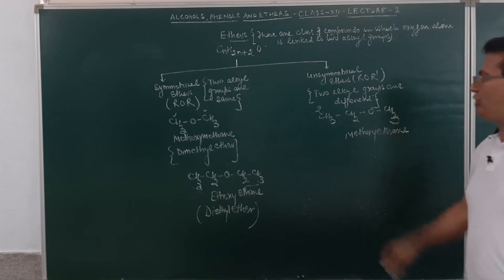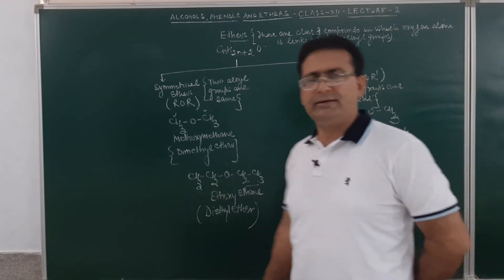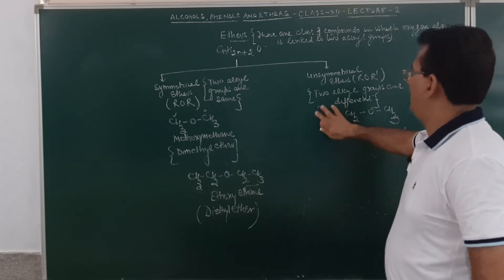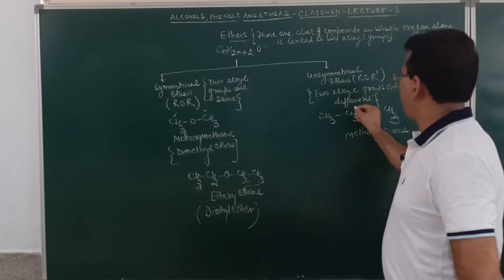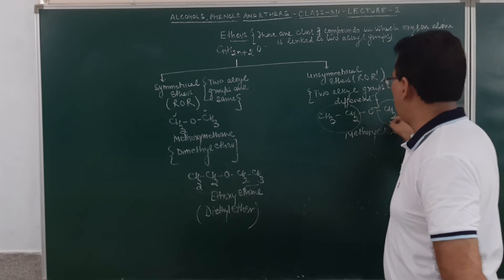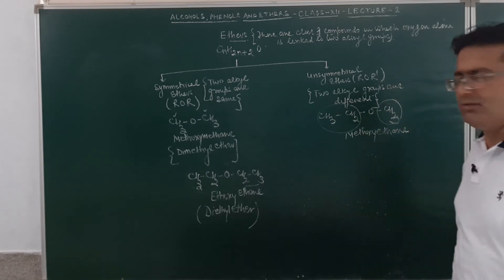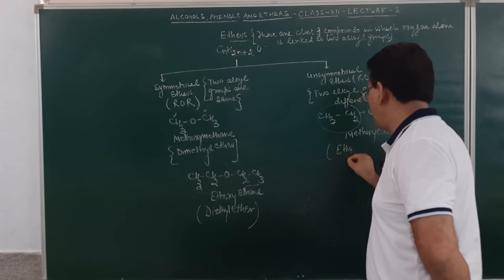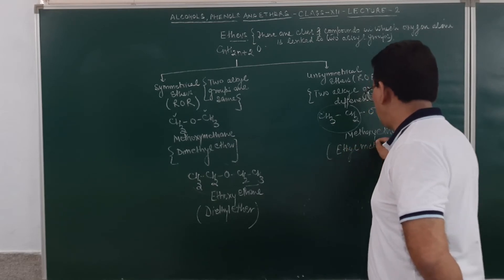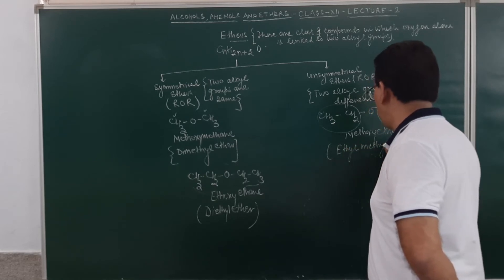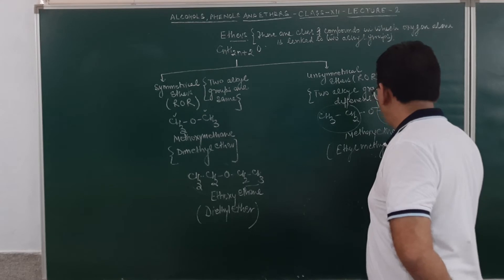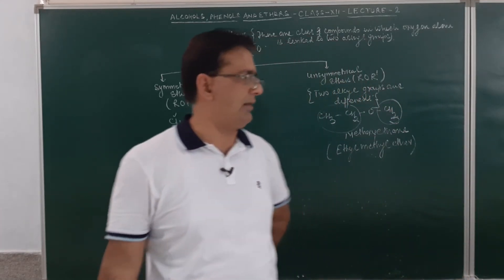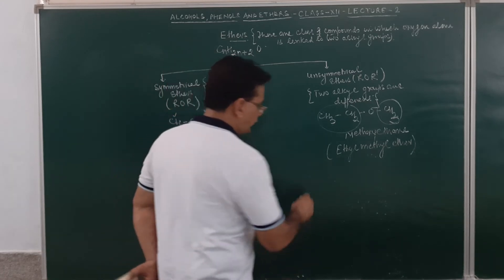Here the two alkyl groups attached to the oxygen atom are different — this is ethyl and this is methyl — so the common name of this will be given as ethyl methyl ether.